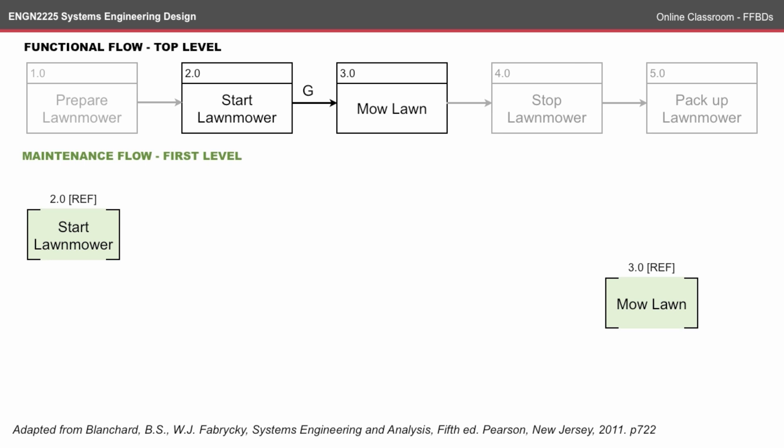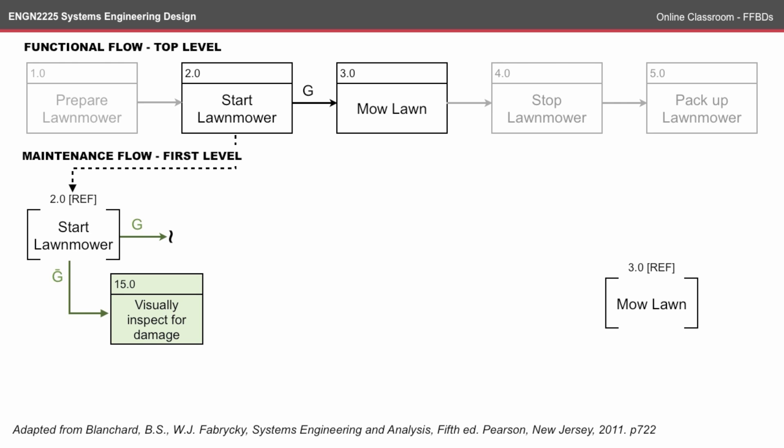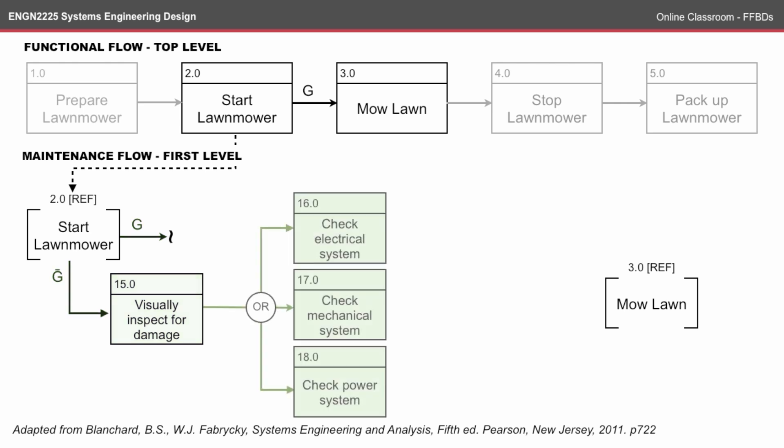We again have a reference block for the start and a reference block for the end. The first step in the no-go would be to visually inspect for damage — perhaps there's a loose cord or the problem is quite obvious. Then we check some of the systems: the electrical system, the mechanical system, and the power system, which might be fuel-based. I've used an OR here because if I succeed with any one of these checks, I'll move on to the next step. For each of these checks there would likely be a second-level maintenance flow explaining the procedure in detail.